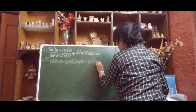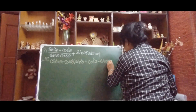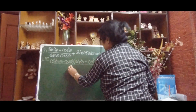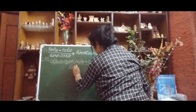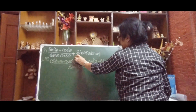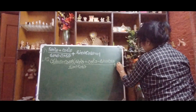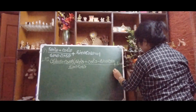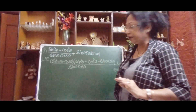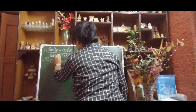So we have (sinθ + cosθ)(sin²θ + cos²θ − sinθcosθ), and this whole expression is divided by sinθcosθ, plus sinθcosθ. This is our left hand side written out. Now you see sinθ + cosθ.